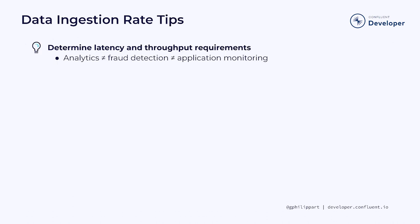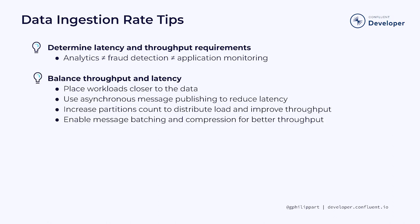Before you go to production, make sure you understand the latency requirements for each dataset. Use cases such as analytics, fraud detection, or application monitoring have different requirements for latency, with some requiring near real-time processing and others being more tolerant of delays. In most situations, you should try to strike a balance between throughput and latency. Use workload placement to process data closer to where it resides to avoid pulling data over a long distance. Asynchronous message publishing can also reduce latency. Increasing partition count can help distribute the load and improve throughput, while message batching and compression can improve throughput at the expense of some latency.